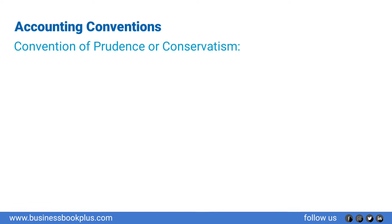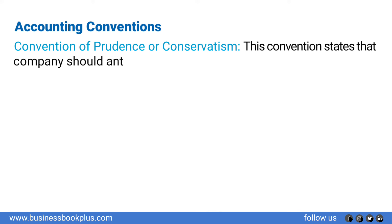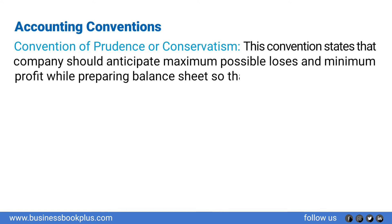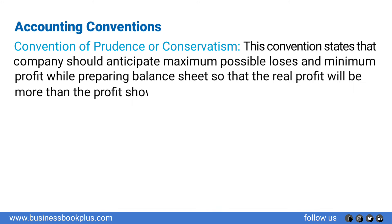Convention of prudence or conservatism: this convention states that a company should anticipate maximum possible losses and minimum profit while preparing the balance sheet, so that the real profit will be more than the profit shown in the balance sheet.